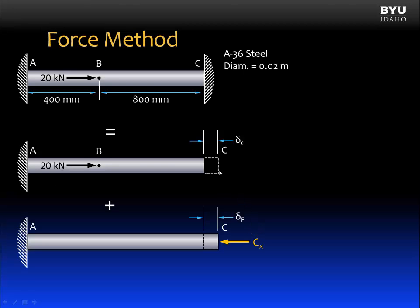But the wall at C will not allow this deflection to occur. The wall is going to push back. And we will represent that with this next diagram that shows the force of the wall, which we'll call C sub x, pushing back. And it's going to push that structure some amount we'll call delta F. That will push it back to its original starting length.